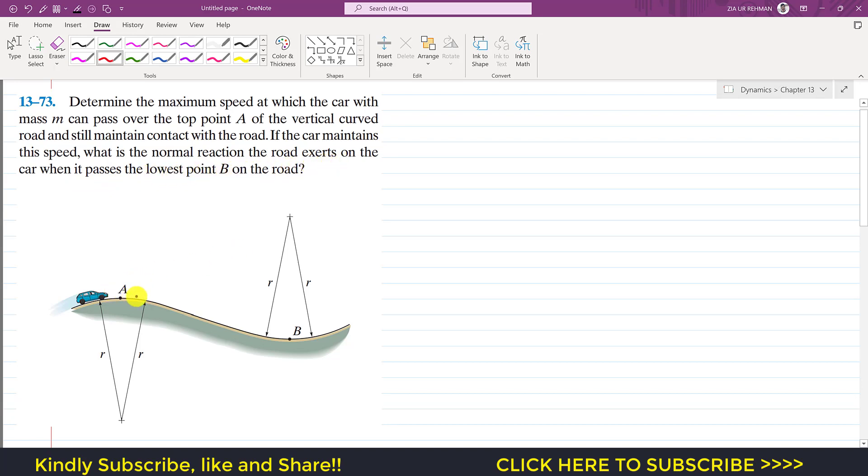Now if the car is at point A and if we are solving this problem by the normal and tangential coordinate system, so we have to define our coordinates. This will be the tangent to the path with our tangential direction and towards the center of the curvature is our normal direction. And if the car is here and if the wheels are just touching the surface, then the normal force will be equal to zero at that particular instant. So here the weight of the car will be acting vertically downward, this will be mg. And the normal force will be acting vertically upward, but that normal force will be equal to zero if it is just in contact with the surface.